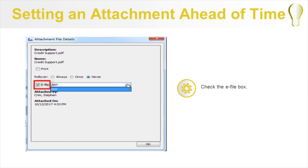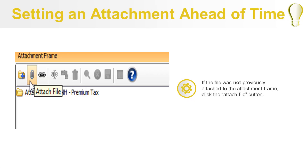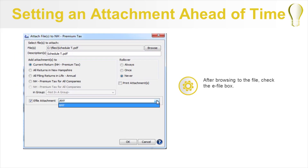When you check the eFile box, the dropdown box that contains the possible eFile types will be enabled. For this type of state, the option is always Any. If the attachment has not already been added to the attachment frame, do so now by clicking on the Attach File button. Here, you will browse to the file and set what to attach it to, whether it will rollover and whether it will print.